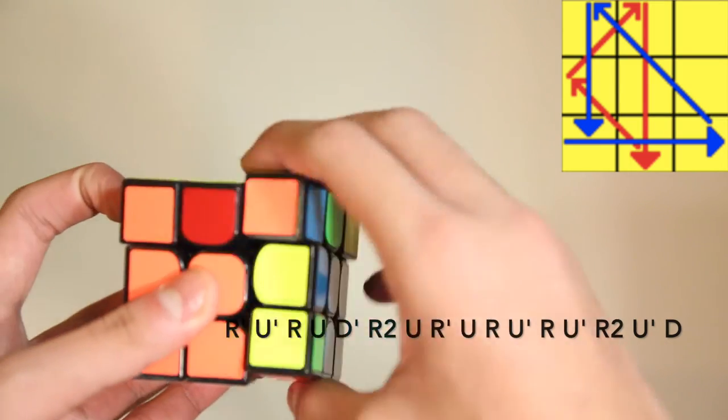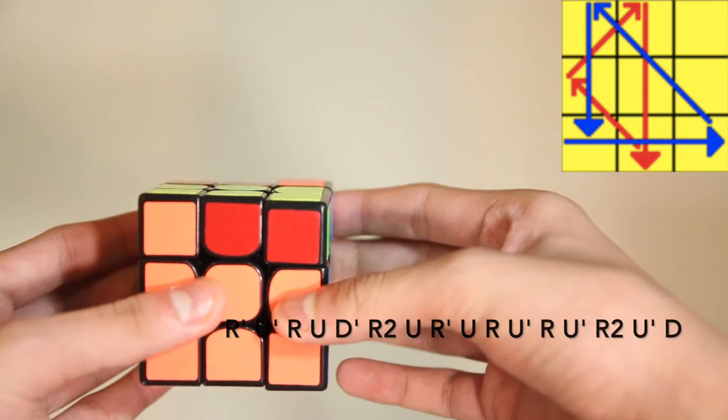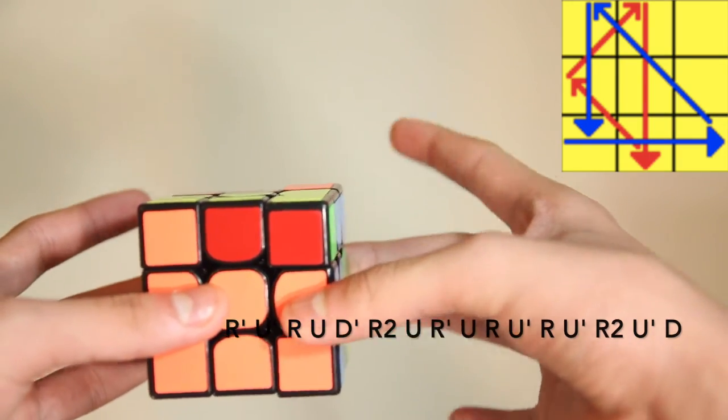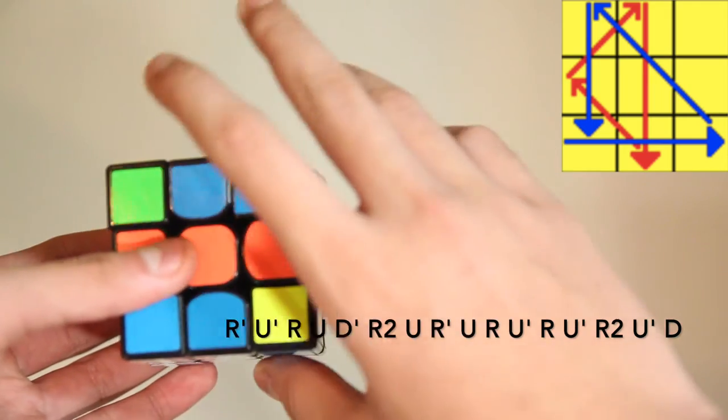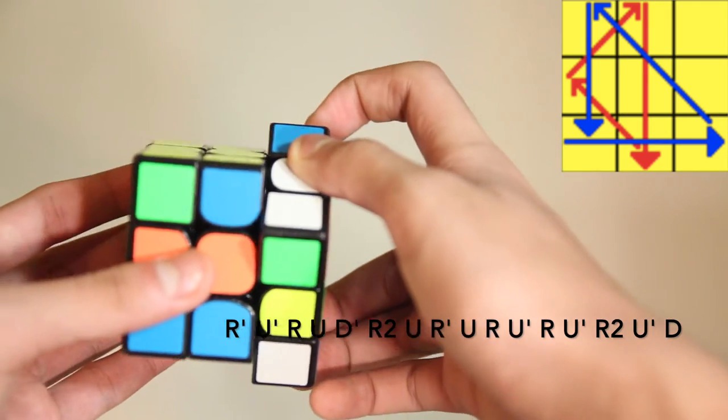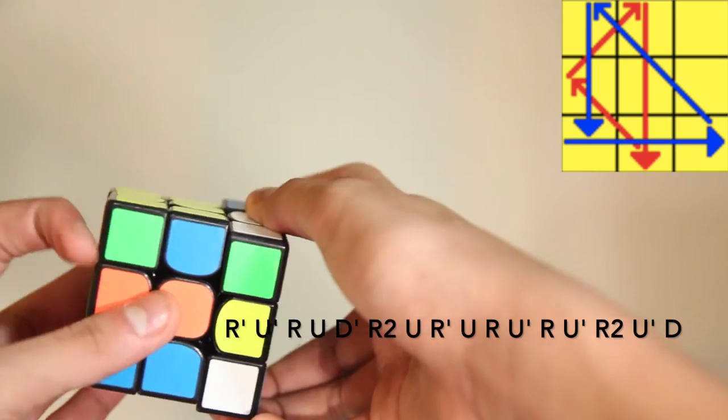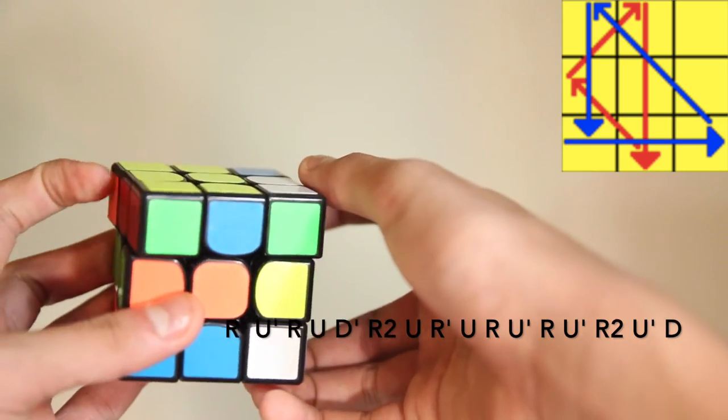Grip it like this, R' U' R. Then U and D' at the same time using these two fingers. Like that. And then re-grip, R2. Now here, you have a choice. You can do a U with your index finger like that.